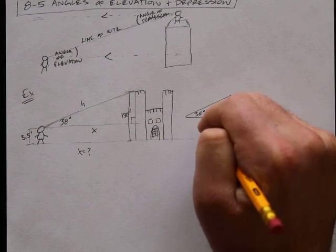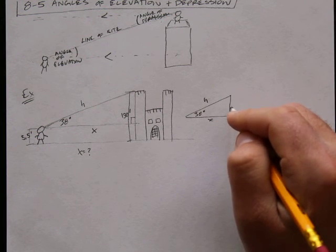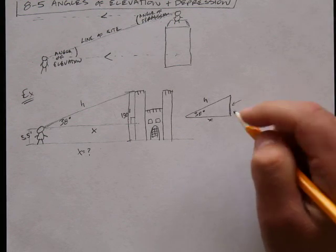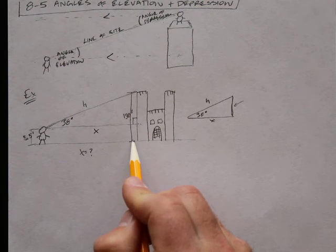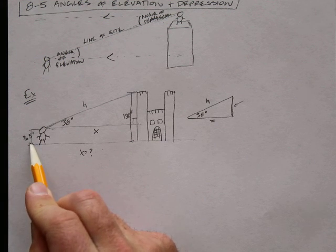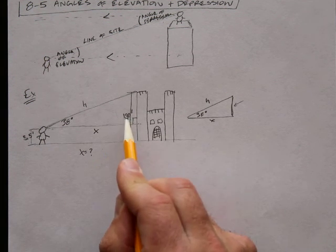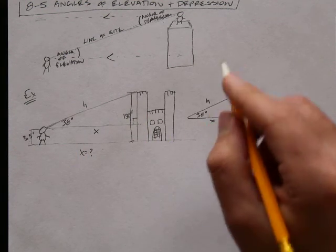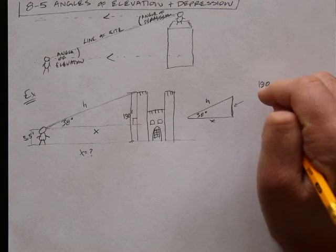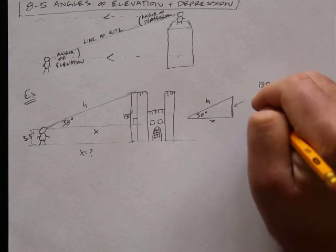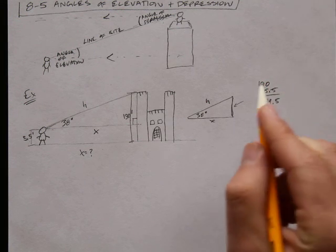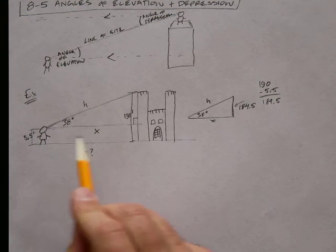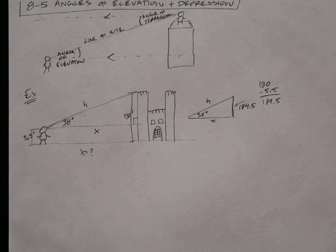38 degrees, x, h. Now I know I can find out this measurement here. And that's, the whole castle is 190 feet. And my guy is 5.5 feet. And so if I just subtract those from one another, then I'll get this distance here. So 190 minus 5.5 is 184.5. So this is 184.5. So pay attention to that kind of stuff. You'll see that on the homework quite a bit.